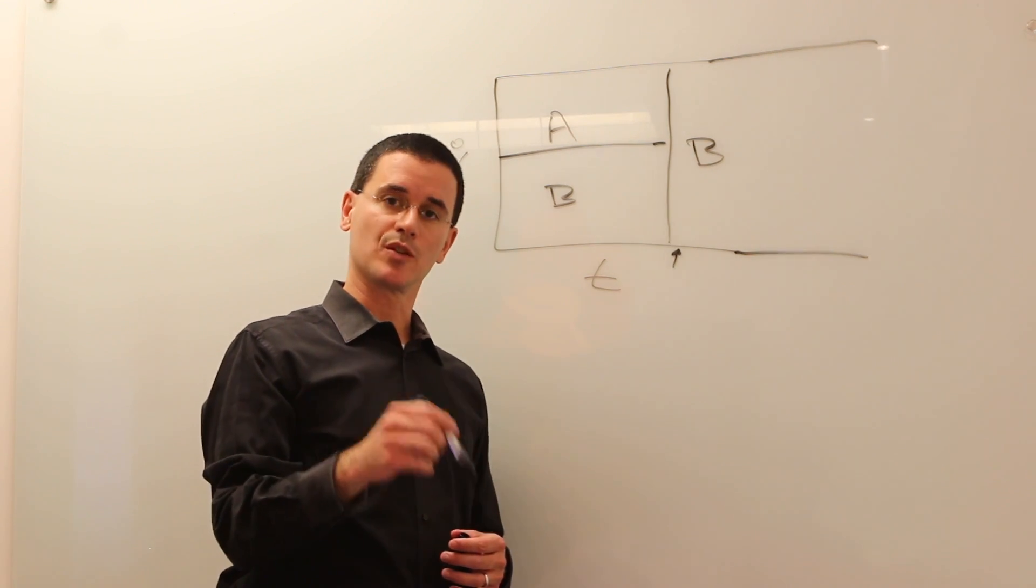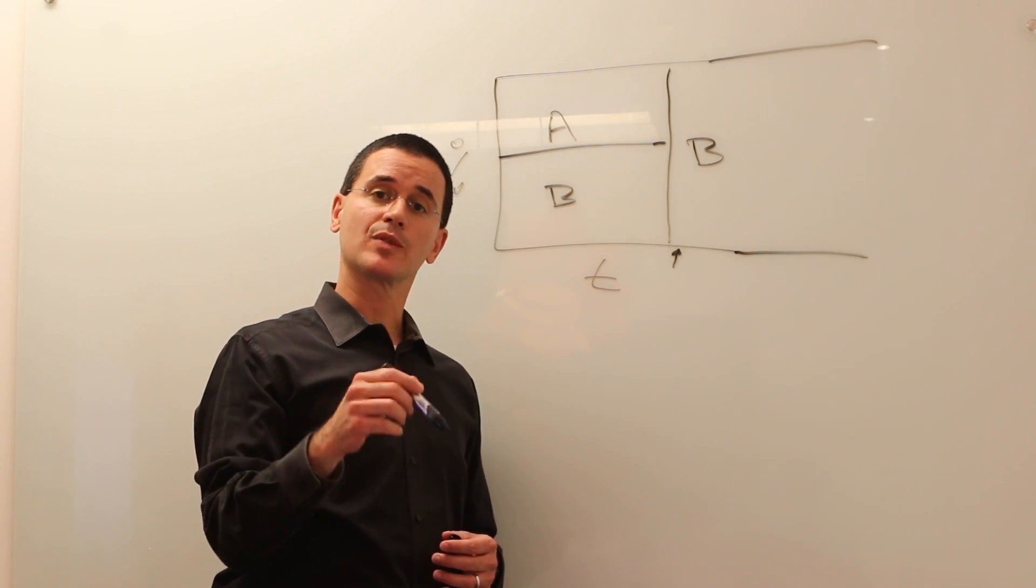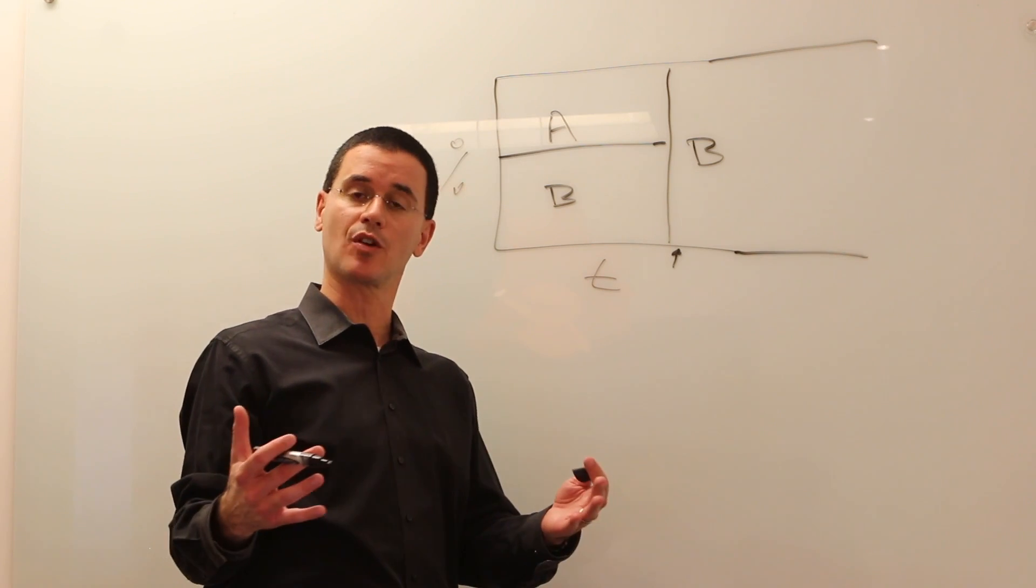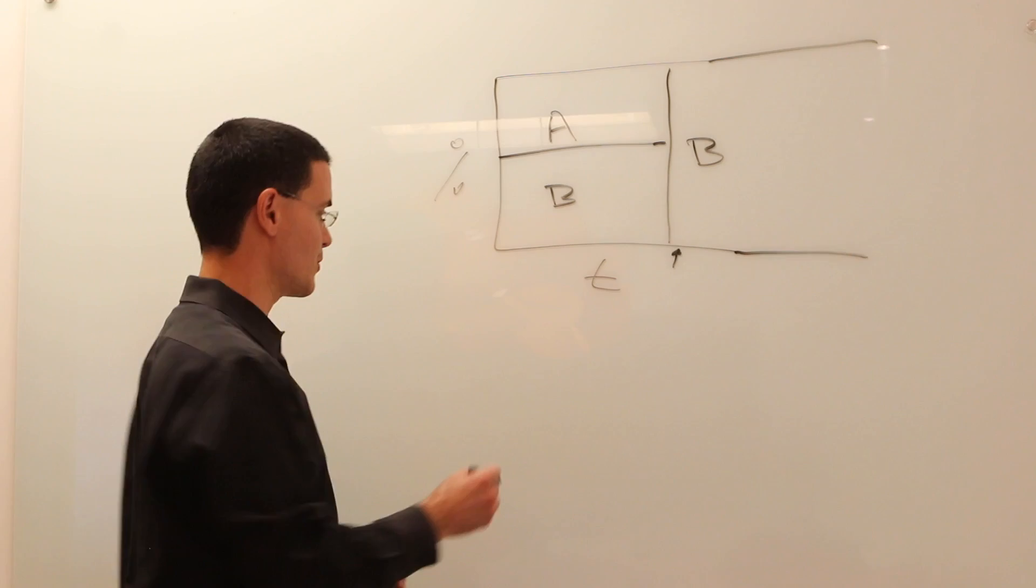Predictive personalization works differently. It starts reallocating traffic based on performance to drive better conversions as soon as you start your campaign. Here's how that might work.